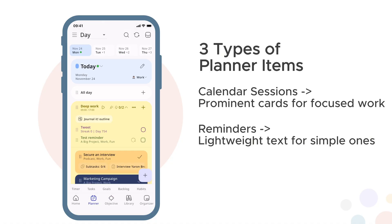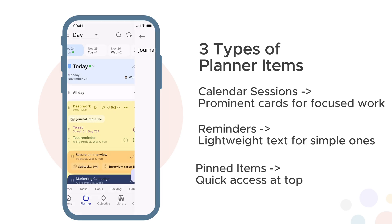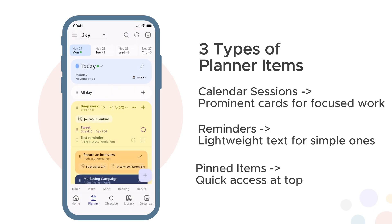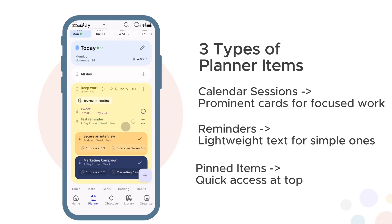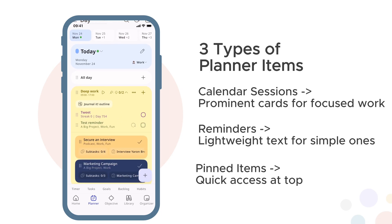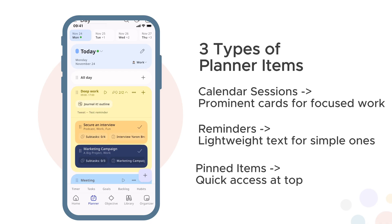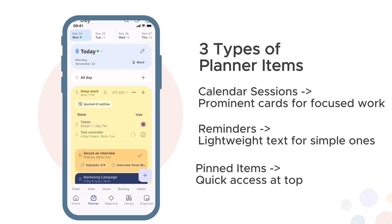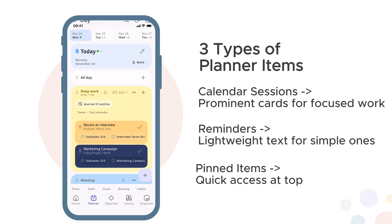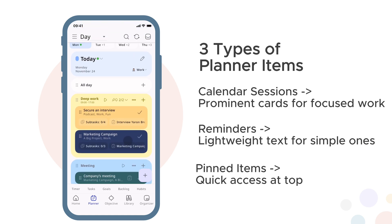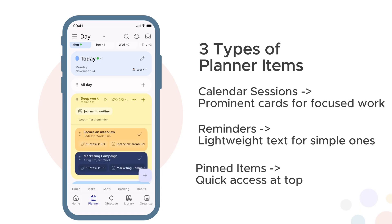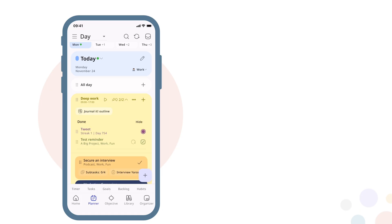Reminders are lightweight text — simple tasks and habits that don't need a card. Quick to scan, easy to check off. Pinned items appear as horizontal cards at the top of your blocks. These are items you want visible while you work: a goal you're focused on, a note with reference information, a task you're chipping away at — quick access to context that matters for that block. This gives you visual hierarchy that matches importance. You can tap a button on each block to hide or show reminders and pinned items, keeping your view clean when you want to focus on sessions.